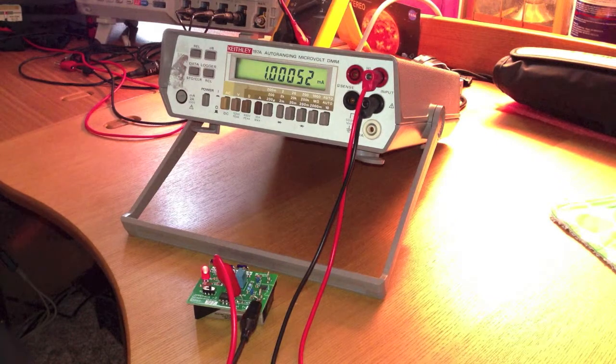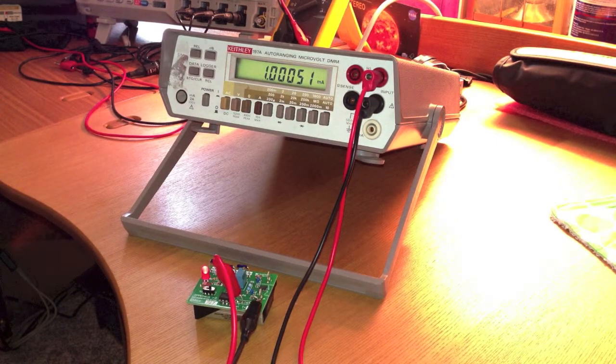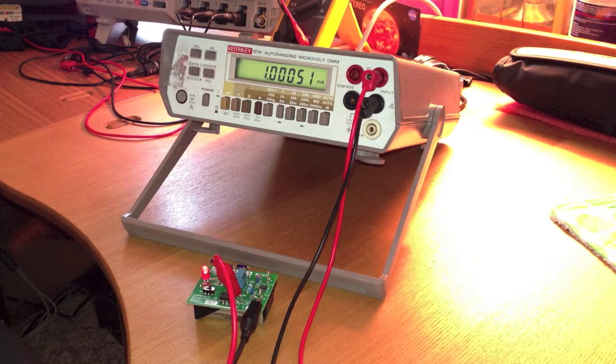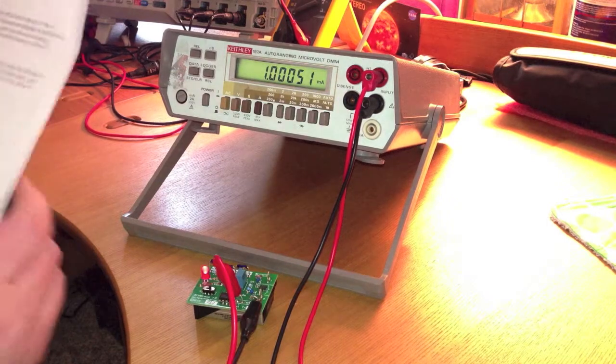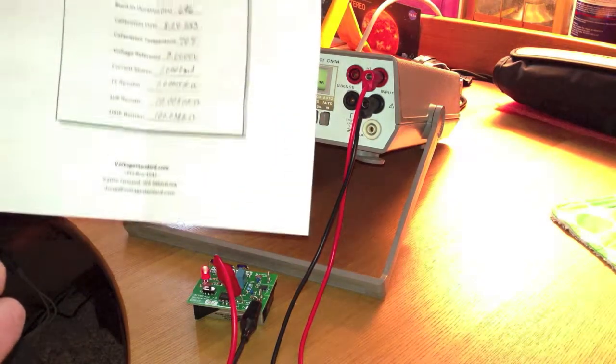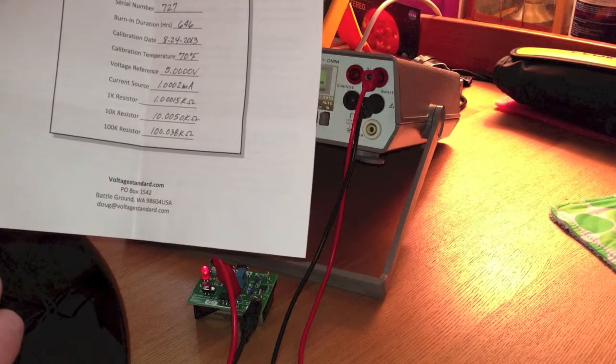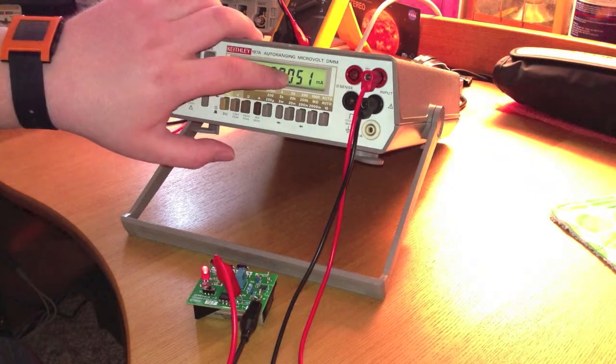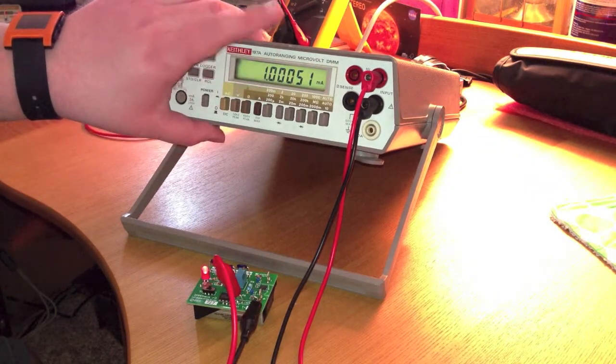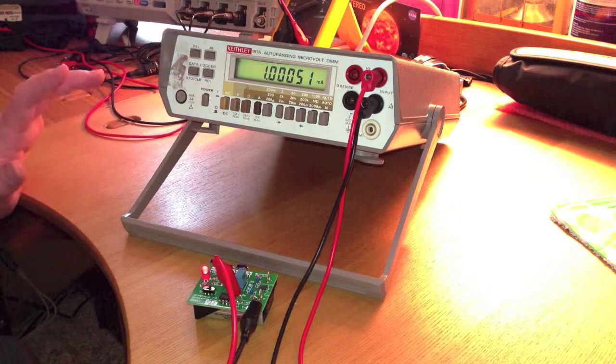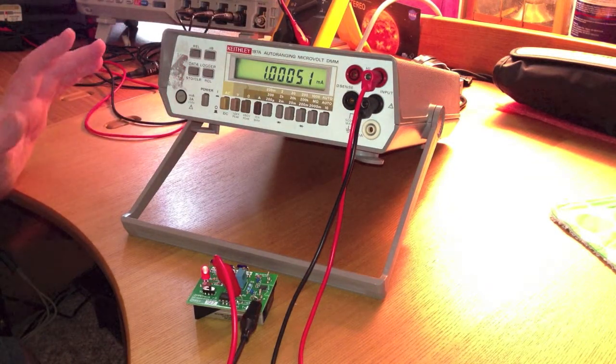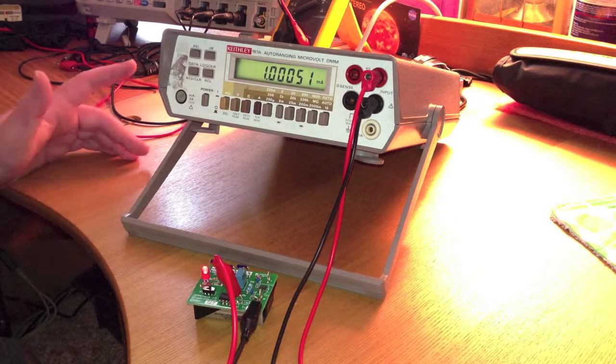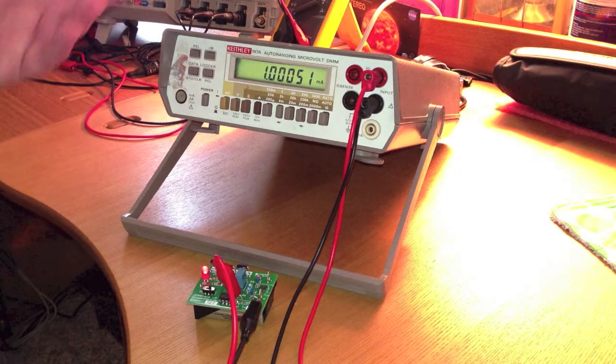We're getting 1.00051 milliamps. And on the sheet now, that's actually tested as 0.0002 milliamps. So yeah, that's a bit off. I think that's actually still technically within spec. That's something I'm going to have to go in and probably calibrate myself. That won't be too big of a deal, and I'll do that in the next video when I open the whole thing up.